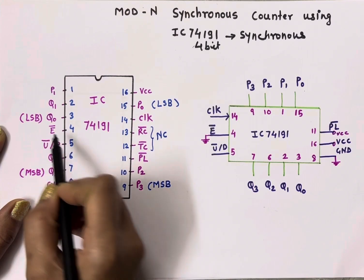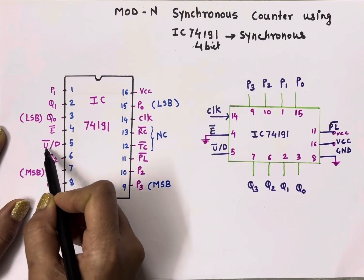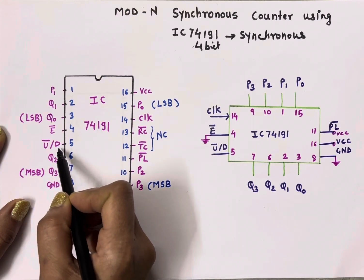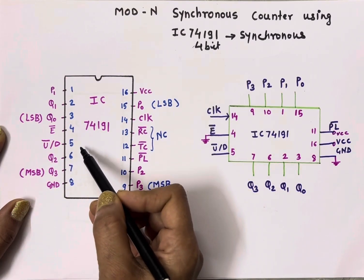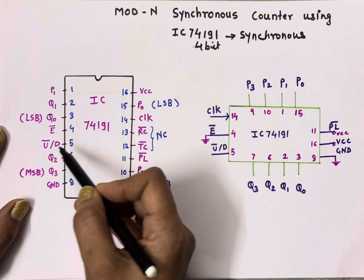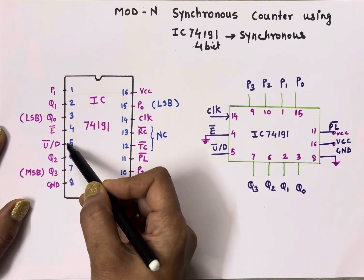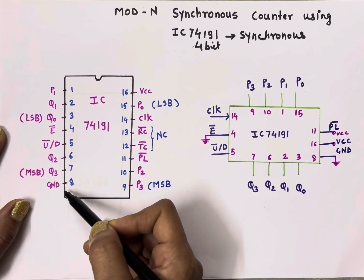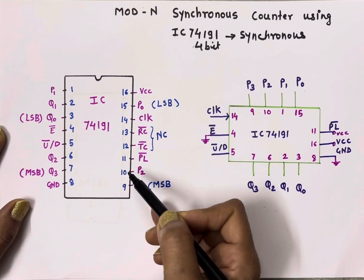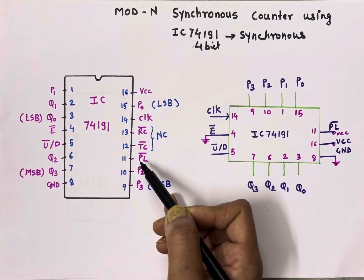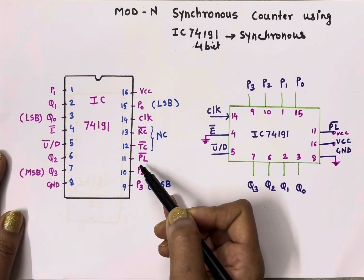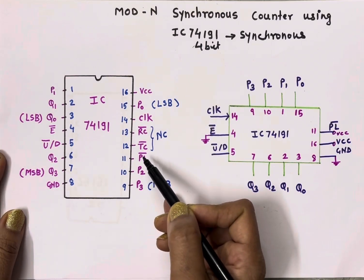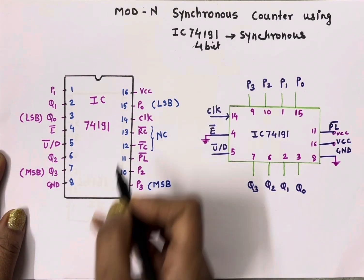Pin number 4 is an active low enable. Pin number 5 is Up-bar/Down — to implement up counter we need to connect pin number 5 to ground, and to implement down counter we connect it to VCC. Pin number 8 is ground. Pin number 11 is parallel load — this is where we can start counting from zero or load any starting value into IC 74191.